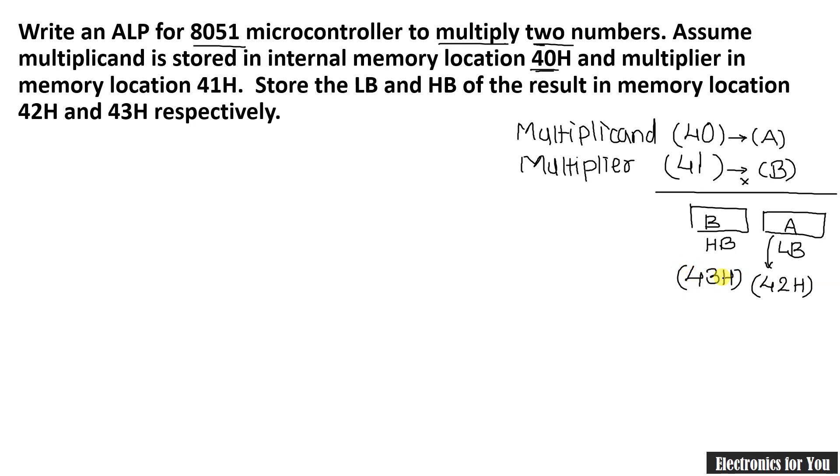So we have to store this lower byte at 42H as per the program requirement and higher byte at 43H. And therefore our steps will be like this. Our first step here is to take this data at 40H into accumulator and our second step will be data at 41H should be taken to register B.